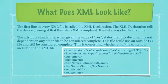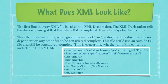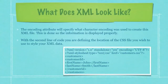XML also provides web developers with the ability to change data site-wide instead of on a page-by-page basis. So what exactly does XML look like? Well, I have an example down here surrounded by white. The first line in every XML file is called the XML declaration. The XML declaration tells the device opening it that this file is XML compliant. It must always be the first line. The attribute standalone in that line, when given the value of yes, states that this document is not dependent on any other file to be considered complete. This file could use an outside CSS file and still be considered complete. This is concerning whether all of the content is included in the XML file. The encoding attribute will specify what character encoding was used to create this XML file. This is done so the information is displayed properly.